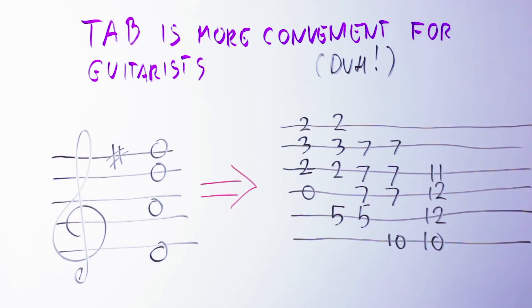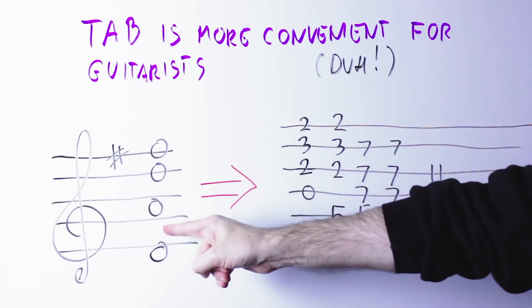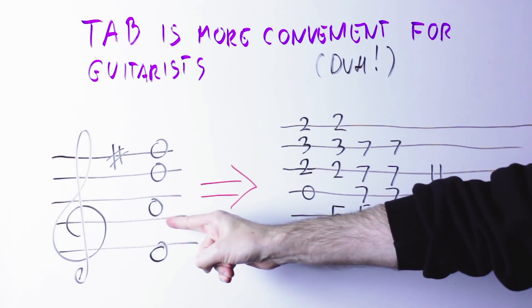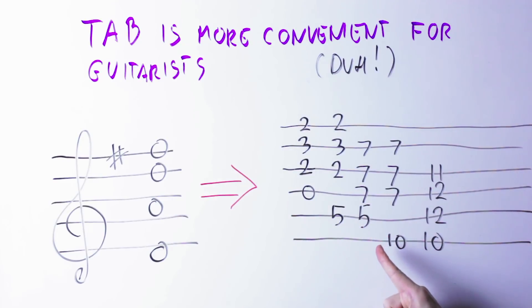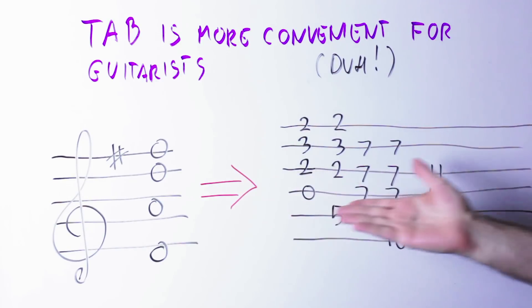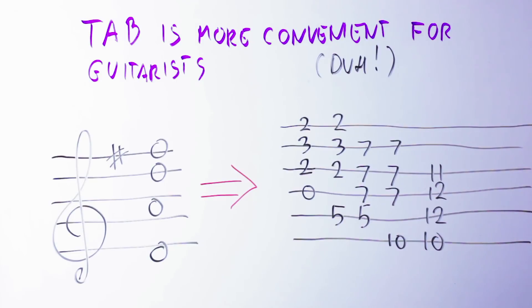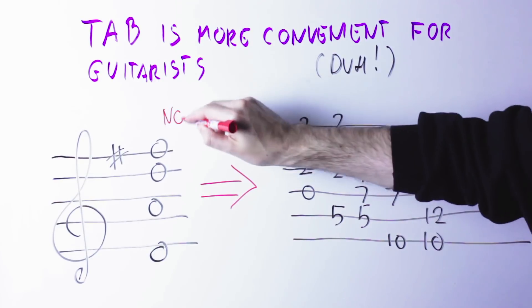So the problem of using standard notation to communicate with a guitar player is that the relationship between the representation of the notes in standard notation and the possible realization on the guitar are not one-to-one. Those very same symbols here can mean any of those here, or to give a nod to all the mathematicians, physicists, engineers in my audience, the function that goes from the standard notation to what you play on the guitar is not injective.